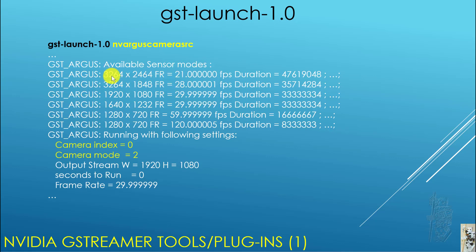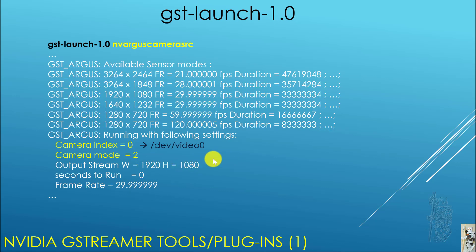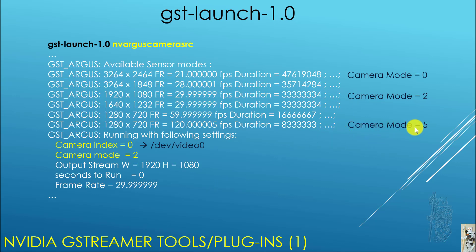One mode is essentially 4K at 21 frames per second, and so on. After displaying that, it says it's running with: camera index zero and camera mode two. Further output shows 1920 by 1080 at 30 frames per second, confirming that camera mode two is that mode. We can then figure out modes zero, one, three, and four, and that mode five must be 1280 by 720 at 120 frames per second — which is the most interesting mode to me and has good use.